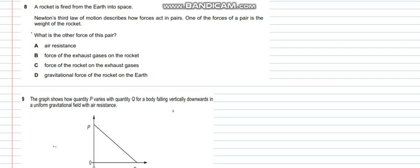Question number 8 says that a rocket is fired from earth into space. Newton's third law of motion describes how forces act in pair. One of the force of a pair is the weight of the rocket. What is the other force of this pair? We must know some things regarding Newton's third law that are that the forces are equal and opposite.